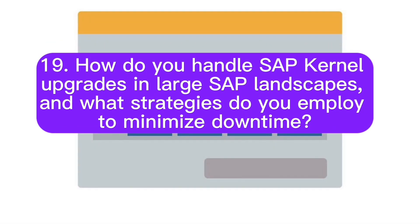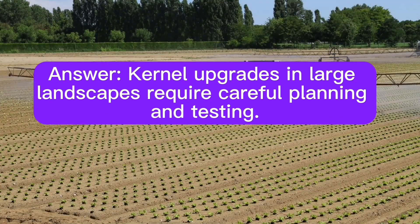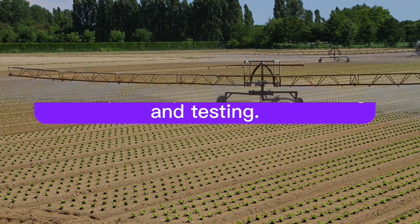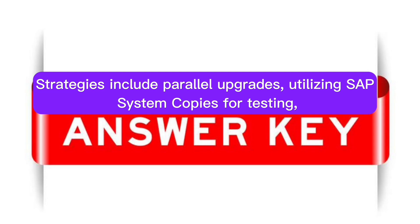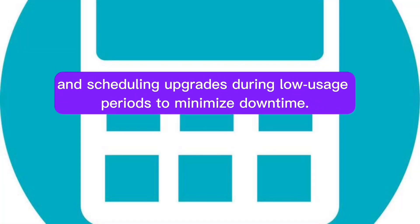Question 19: How do you handle SAP kernel upgrades in large SAP landscapes, and what strategies do you employ to minimize downtime? Answer: Kernel upgrades in large landscapes require careful planning and testing. Strategies include parallel upgrades, utilizing SAP system copies for testing, and scheduling upgrades during low usage periods to minimize downtime.